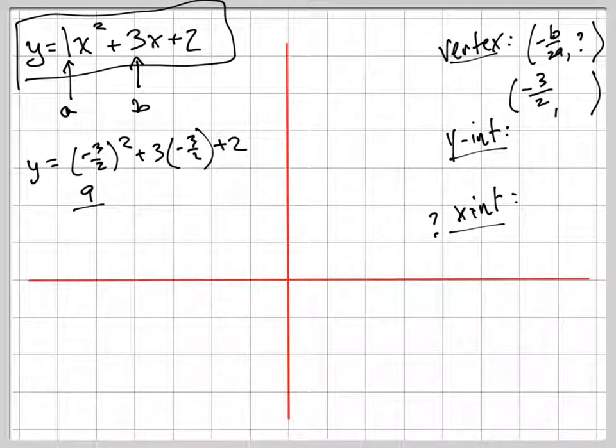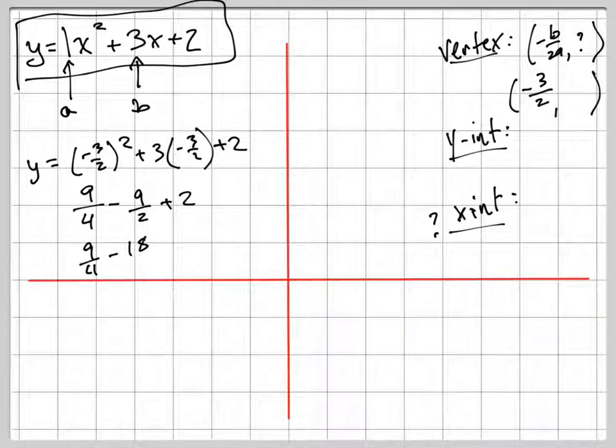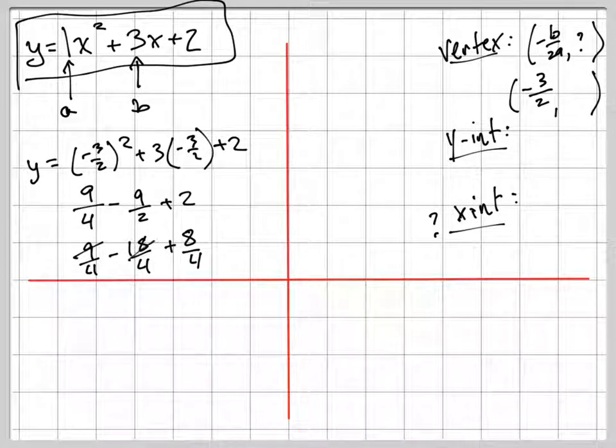See what I'm doing? I'm plugging negative 3 halves in to the x's. And when I square that, I'm going to get 9 fourths minus 9 halves plus 2. Let's get common denominators. So this is 9 fourths minus 18 fourths plus 8 fourths. Change it all into fourths, right? That's negative 9 plus 8 is negative 1. So negative 1 fourth.